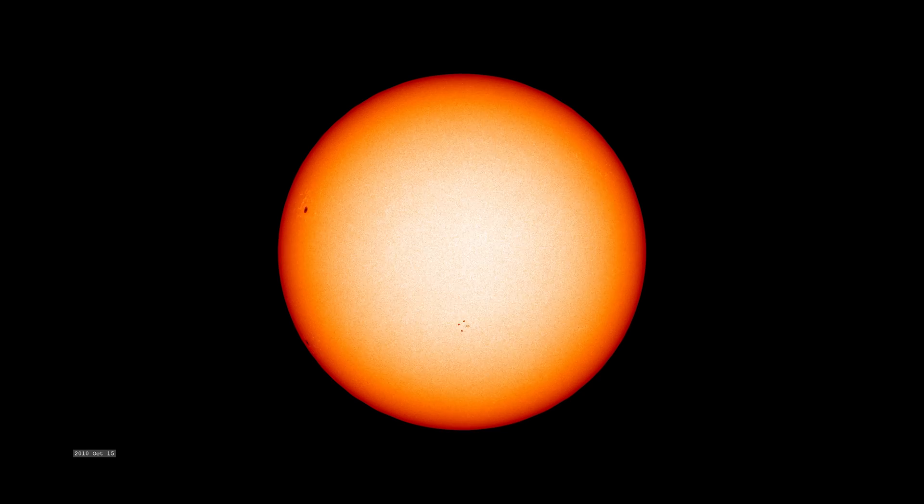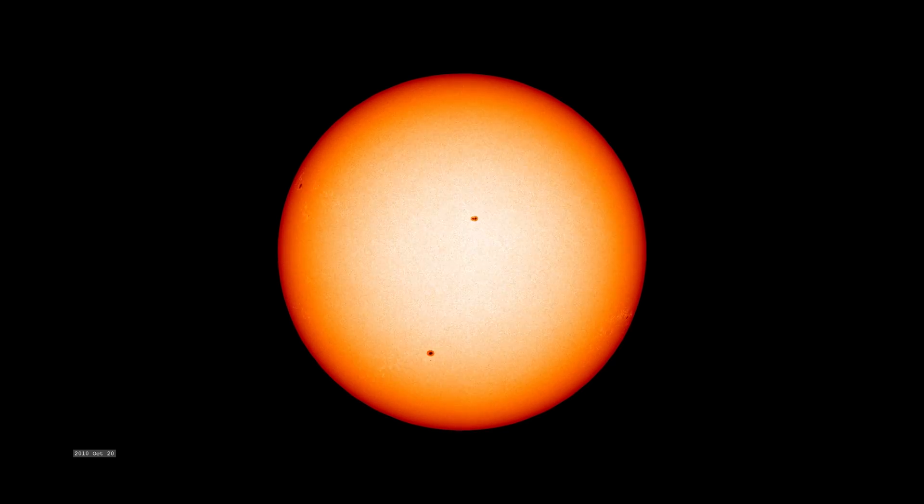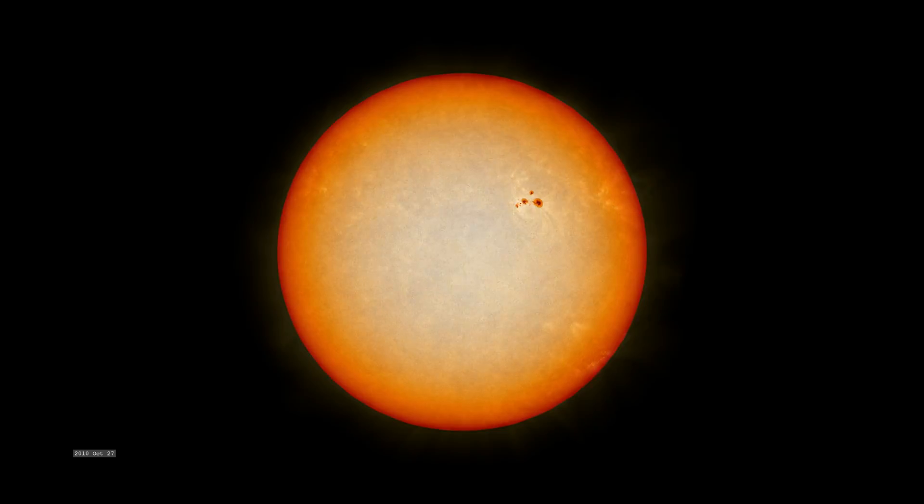At visible wavelengths, the Sun is relatively featureless, its surface marked only with occasional sunspots carried into view by the Sun's rotation. These sunspots can change shape in hours or stay stable for days.